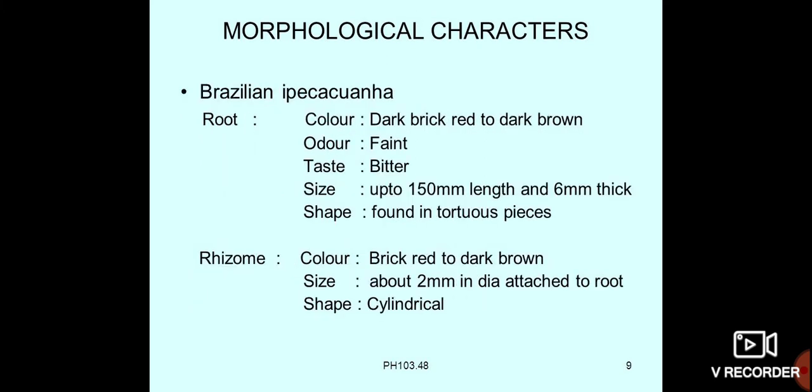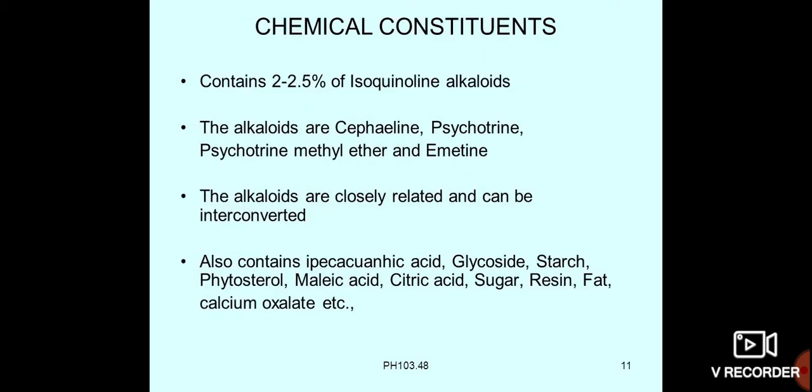The Brazilian ipecacuanha has a dark brick red to dark brown color, faint odor, bitter taste, up to 150 mm in length and 6 mm thick, with a tortuous shape. Both root and rhizome parts are used. The rhizome has a brick red to dark brown color, about 2 mm in diameter, cylindrical shape, and is attached to the root.